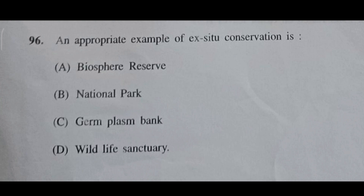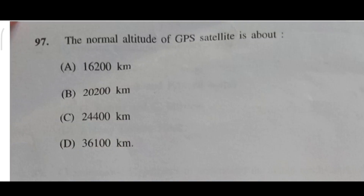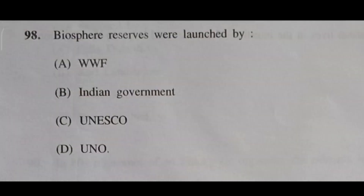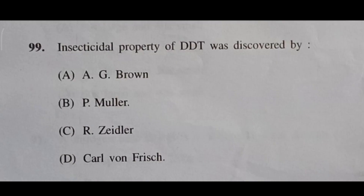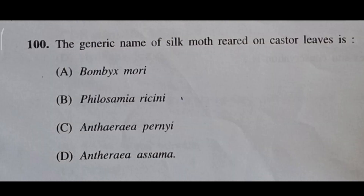Question 96: An appropriate example of ex-situ conservation is — answer will be C, germplasm bank. Question 97: The normal altitude of a GPS satellite is about — answer will be B, 20,200 kilometers. Question 98: Biosphere reserves were launched by — answer will be C, UNESCO. Question 99: Insecticidal property of DDT was discovered by — answer will be B, Paul Müller. Question 100: The generic name of silk moth reared on castor leaves is — answer will be B, Philosamia ricini.